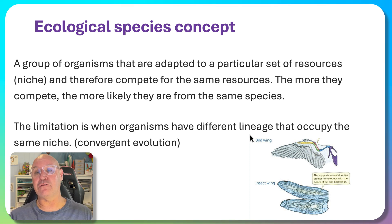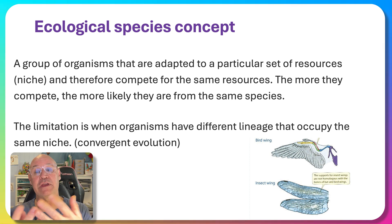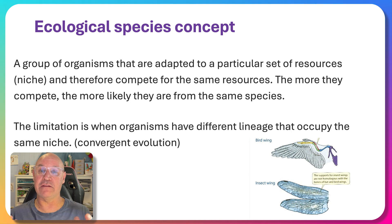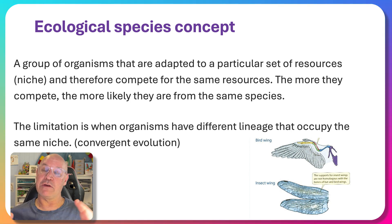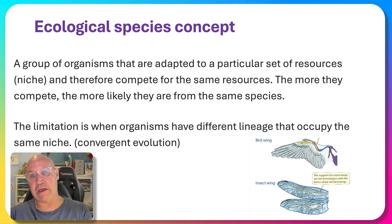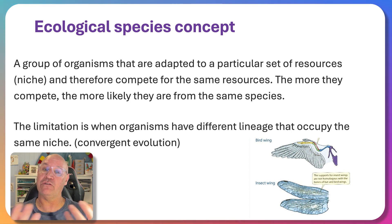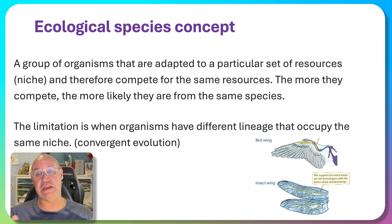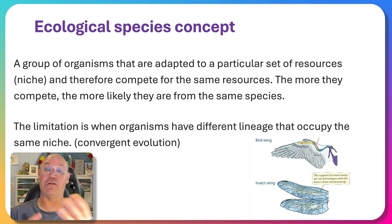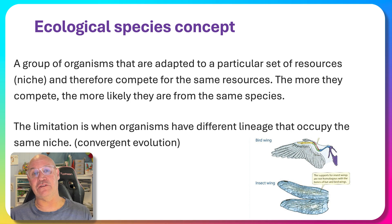For example, organisms with analogous structures — like the wing of a bird and the wing of an insect — are structurally entirely different and have entirely different evolutionary histories, yet both developed adaptations to fly and possibly use similar food sources, essentially occupying the same niche. Clearly they're not the same species, even though they share the same niche. So each of these species concepts has some advantages, but they also all have limitations.